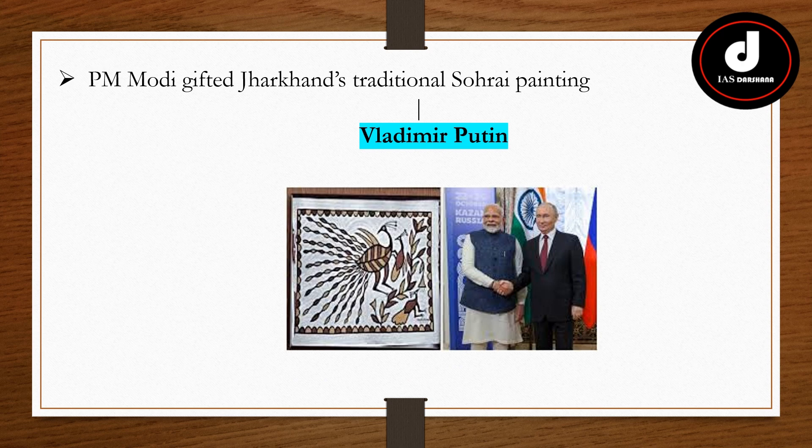Prime Minister Narendra Modi gifted Jharkhand's traditional Sohrae painting to Russian President Vladimir Putin during the recent BRICS summit in Kazan, reflecting the indigenous art of Hazaribagh district and showcasing India's rich cultural heritage. Additionally, he gifted a mother of pearls seashell vase to the President of Iran and a Warli painting from Maharashtra to the President of Uzbekistan. Each piece representing regional artistry and cultural heritage.